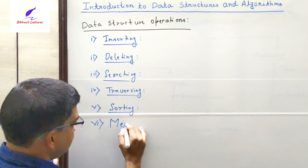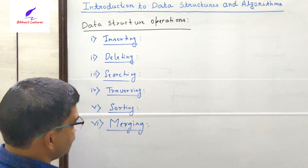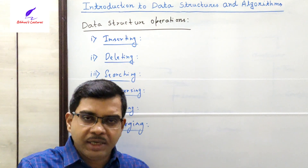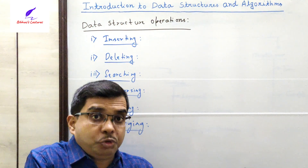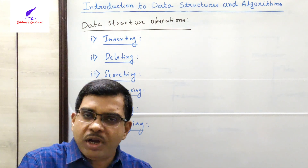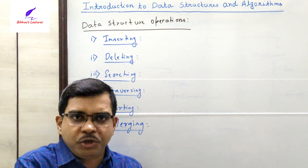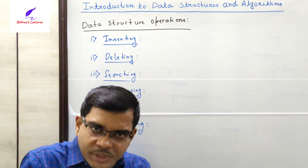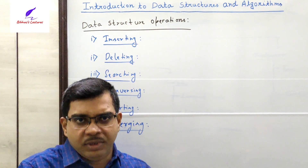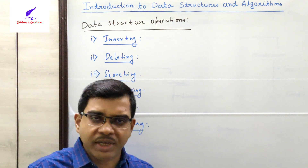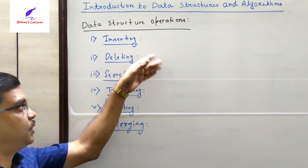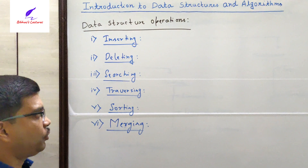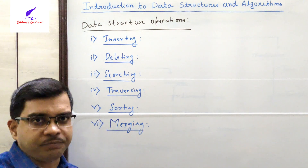The final operation is merging — M-E-R-G-I-N-G — the merging operation. Merging means if we want to create a list from two sorted lists. Suppose you have one sorted array and another sorted array; if you want to create a resultant sorted array from these two, then the two sorted arrays have to be merged to create the final array. This is called the merging operation. So basically these six operations — inserting, deleting, searching, traversing, sorting, and merging — are the operations we can perform on data structures.